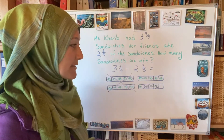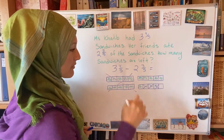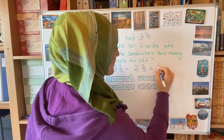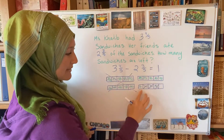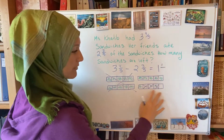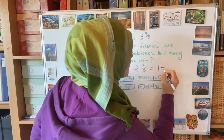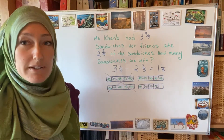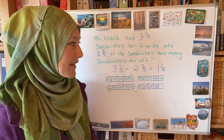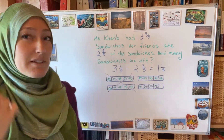All that's left — I look at what remains. I have 1 whole that's left and 1 part out of the 5th-sized piece. So my answer is 1 and 1 fifth. As a sentence: there are 1 and 1 fifth sandwiches that are left.